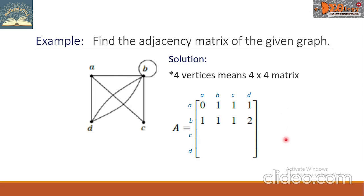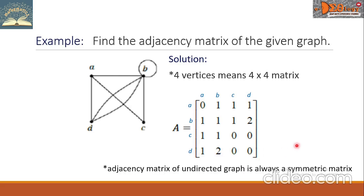Using the pattern, we will now be able to write the numbers for row 3 and row 4. For row number 3, the elements are 1, 1, 0, 0. Take note: the adjacency matrix of an undirected graph is always a symmetric matrix. We can see the symmetry here with respect to the main diagonal. This is the final answer.